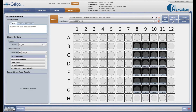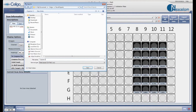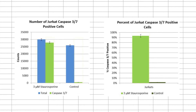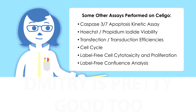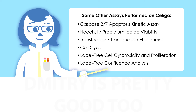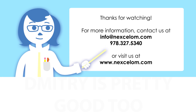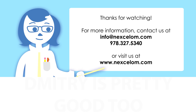All the data can be exported to Excel as a CSV file in plate-based layout. Each Excel file contains the number of caspase 3-7 and Hoechst-positive cells as well as percent of apoptosis. Generated bar graphs show an increased number of caspase 3-7-positive cells and percent apoptosis in the staurosporine-treated samples. These and other assays are routinely performed on the Celigo. To learn more or schedule a free in-lab demonstration, call us or visit Nexcelom.com.